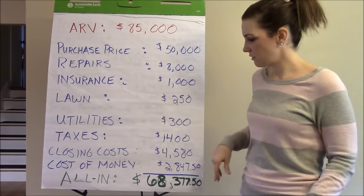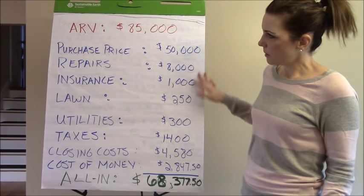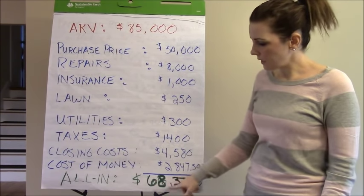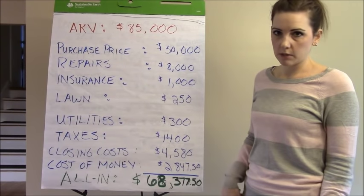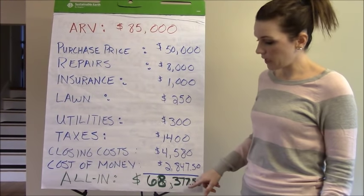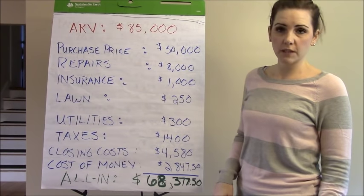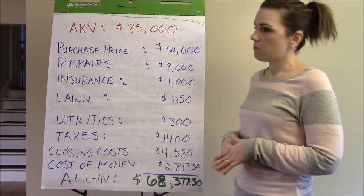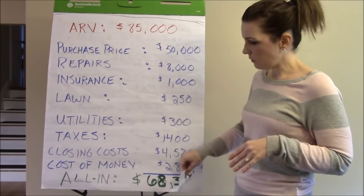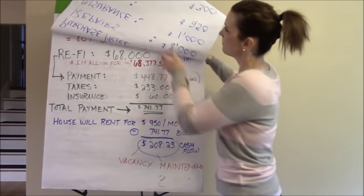So between our purchase price and all our costs, we were all into the property for $68,377.50. That's our all-in cost — everything that we paid. I'll flip to the next page here.